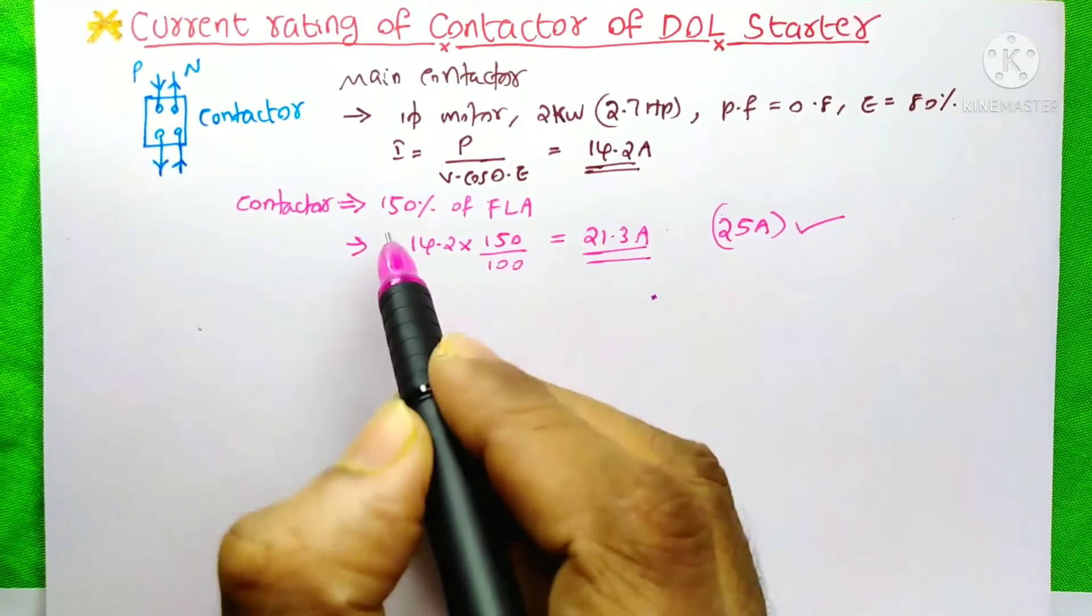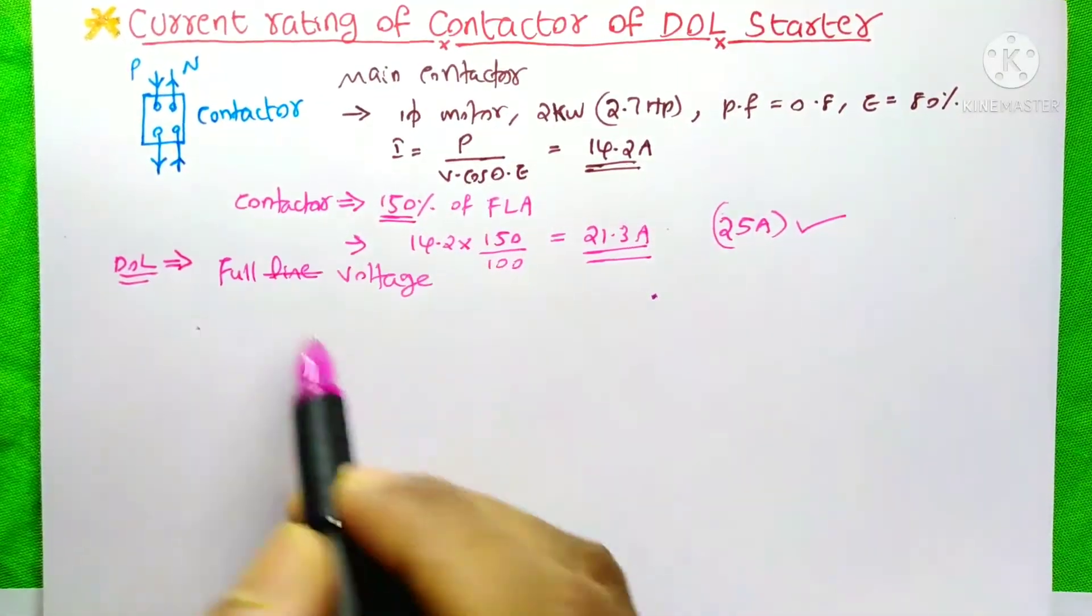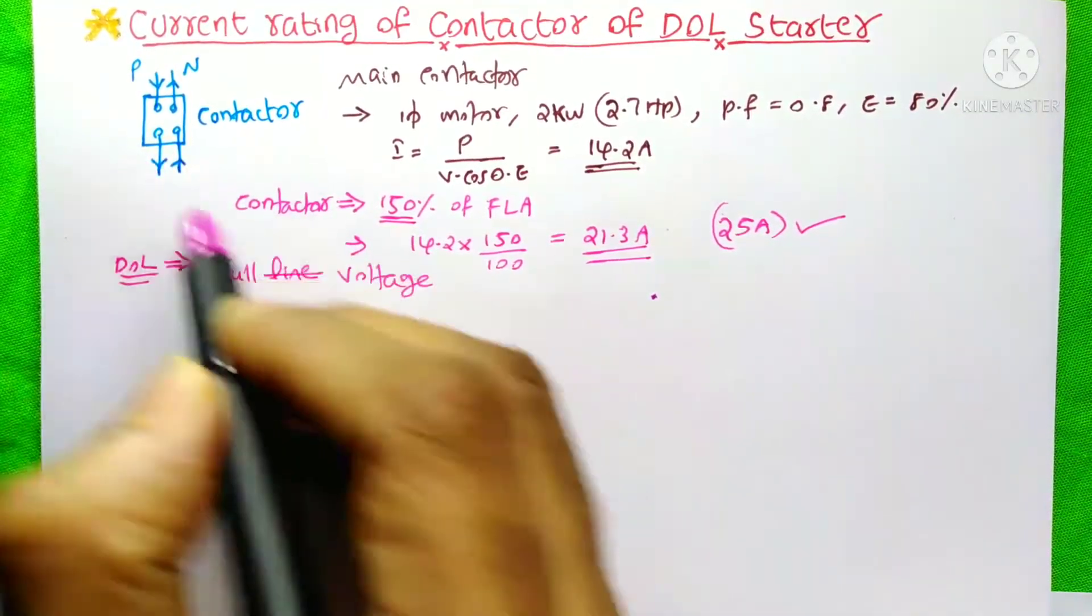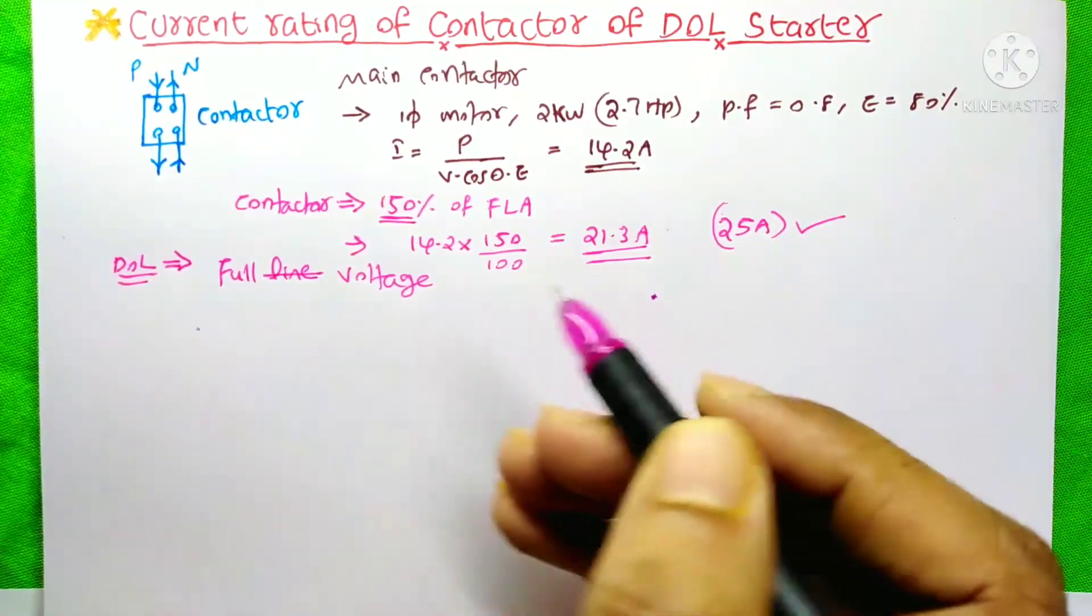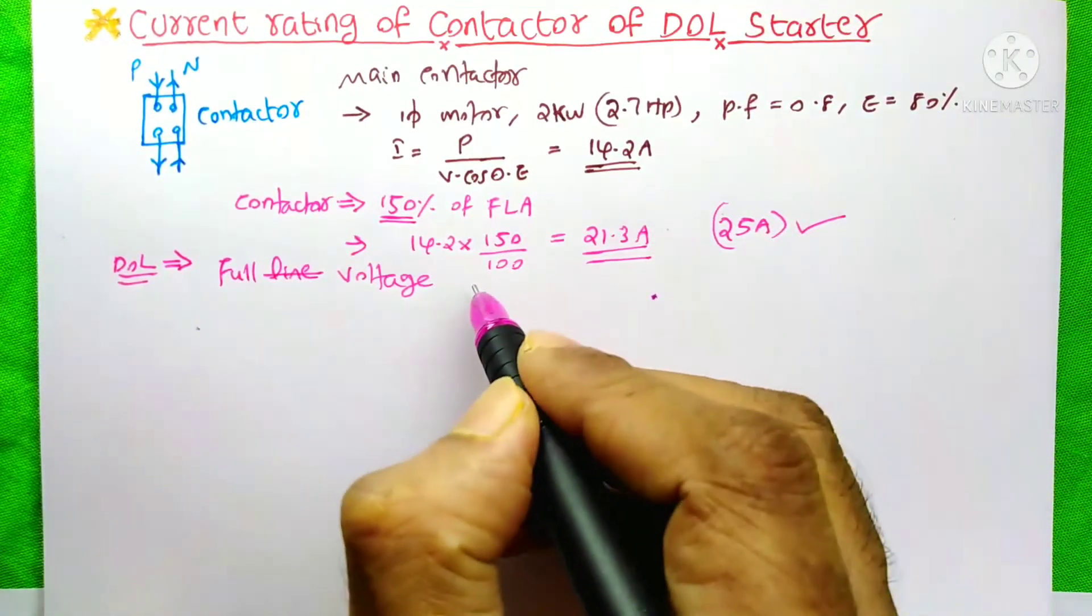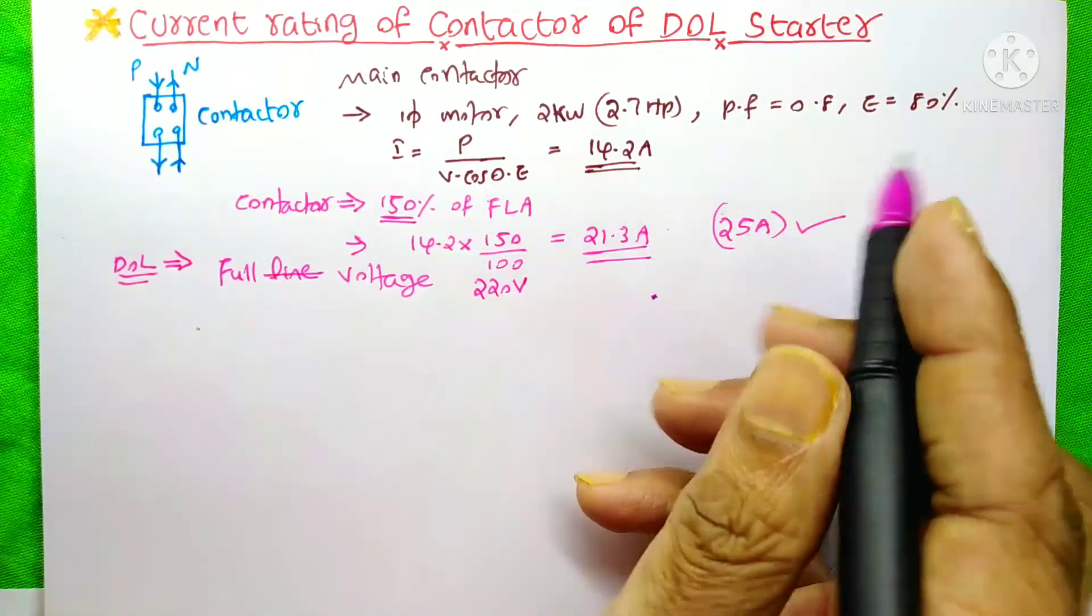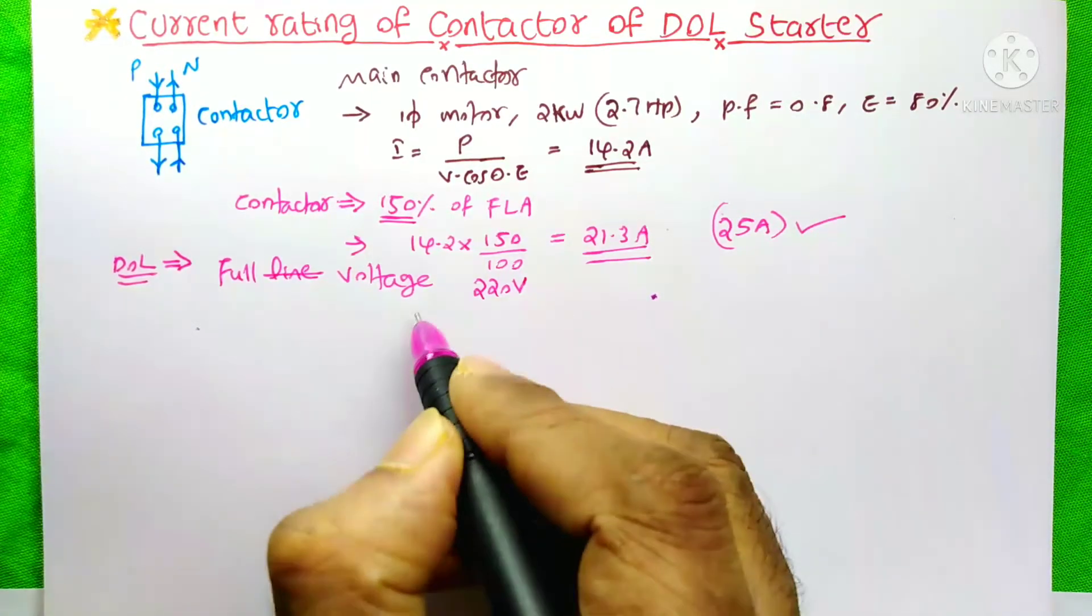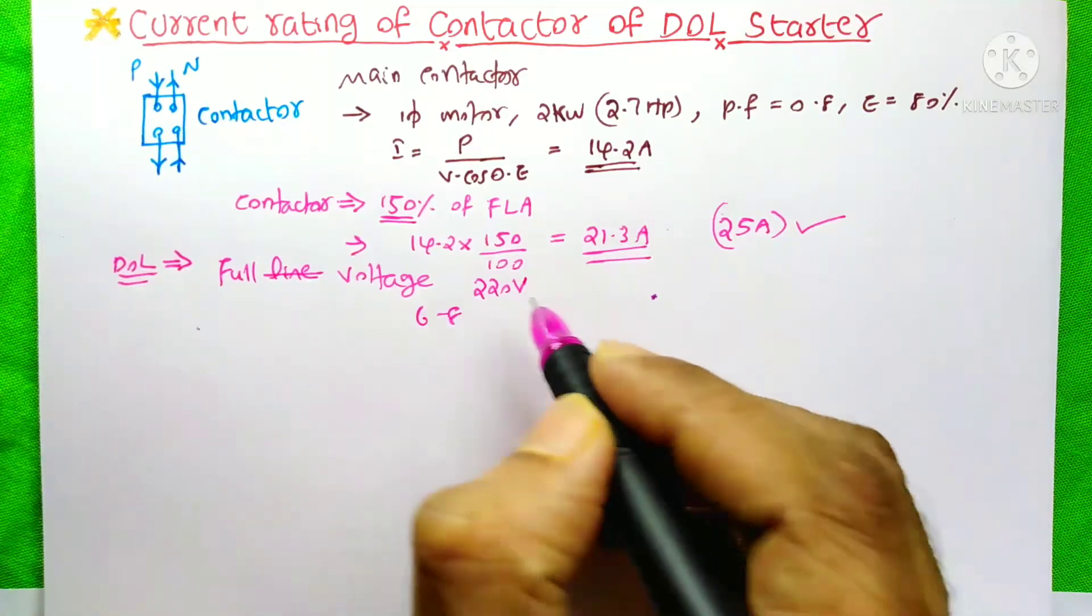Here you might be thinking, why do we consider this 150% of the full load ampere? On the starting time, we apply the full voltage to the phases of the motor. That means there is no reduction of the voltage. So in this case, 220 voltage will be applied directly to the motor's windings. At this time, you know the motor will take 6 to 8 times its rated current, only for a few seconds.